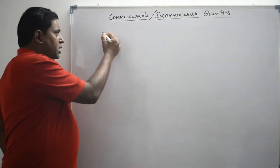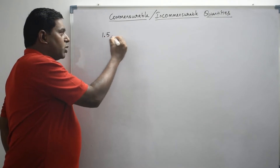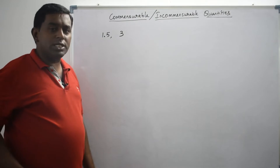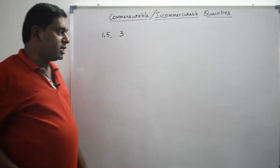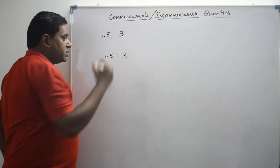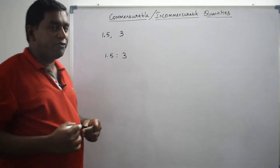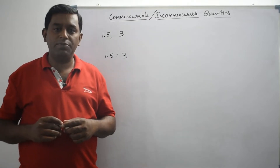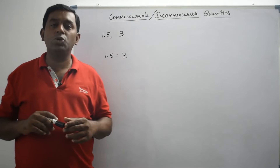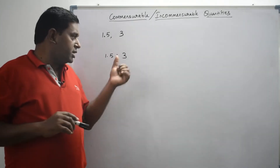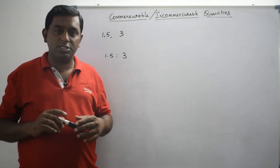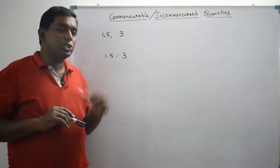Let's look at an example. Consider the two quantities 1.5 and 3. Can we say these two quantities are commensurable? Let's check. I write the ratio between these two quantities: 1.5 is to 3. My aim is to express both terms of this ratio as integers. Already the second term is an integer, 3. Only the first term is not an integer — it's a decimal.